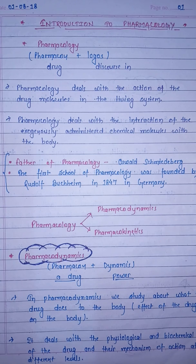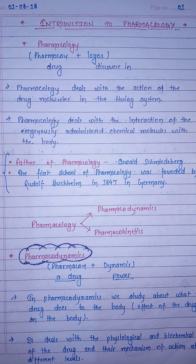Overall, in studying pharmacology we study what the drug does to the body and what the body does with the drug. The father of pharmacology is Oswald Schmiedeberg, and the first school of pharmacology was founded by Rudolf Buchheim in 1847 in Germany.